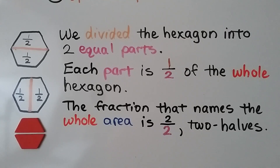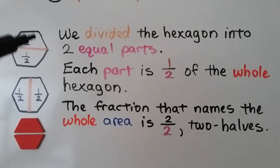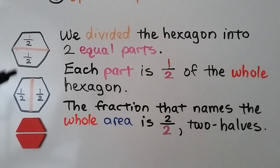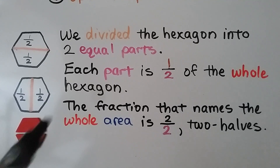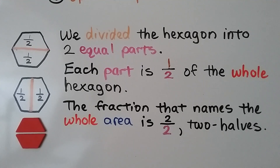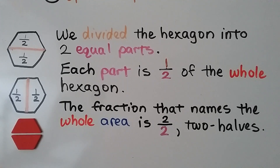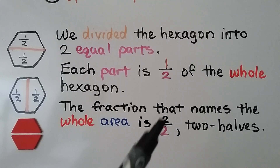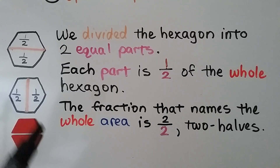We divided the hexagon into two equal parts, and each part is half of the whole hexagon. The fraction that names the whole area is two halves. We can write it with a two as the numerator and a two as the denominator. Remember, when the numerator and denominator are the same number, it's equal to one whole.